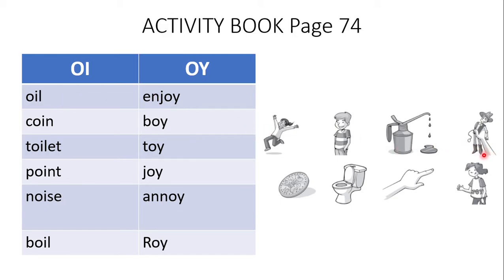This one is a cowboy, but it's more like a cowboy toy, so it goes with the oy word: toy. Next one, as you can see, is a coin, so it goes with oi: coin.